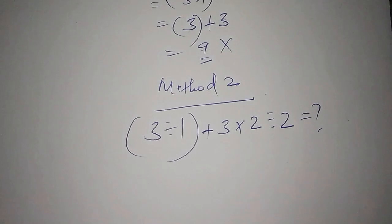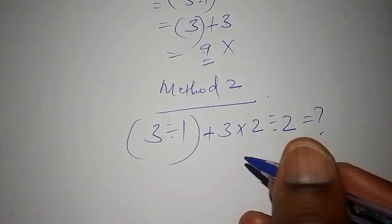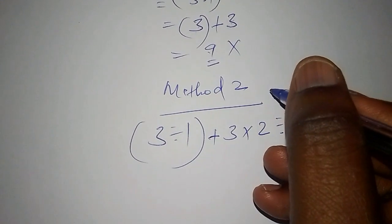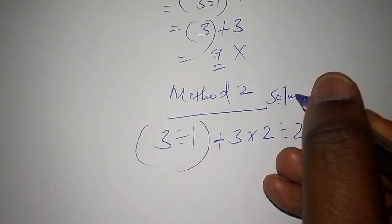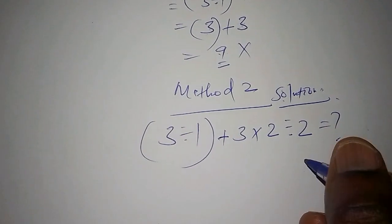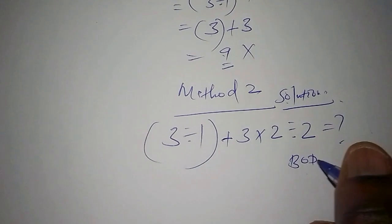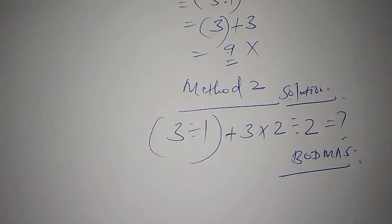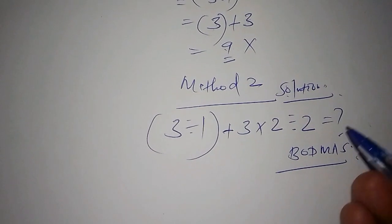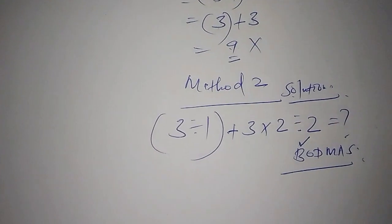Under Method 2, we are going to look at the solution and consider what is called BODMAS. We are going to use the BODMAS rule. B stands for bracket, so you have to work out the bracket first.